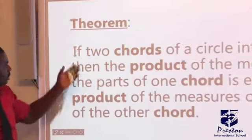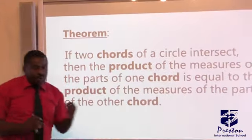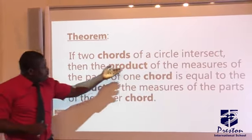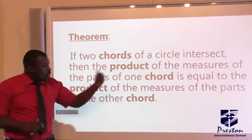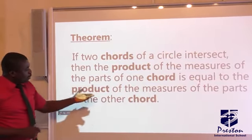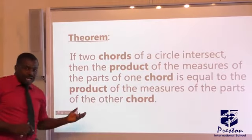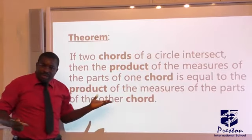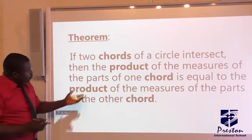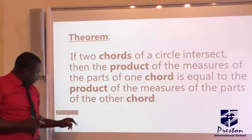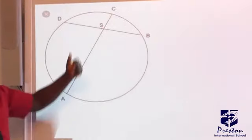Theorem two says if two chords of a circle intersect, then the product of the measure of the parts of one chord is equal to the product of the measure of the other chord. Maybe you don't understand what I have written in words. Let's see from the diagram. Look at this one.